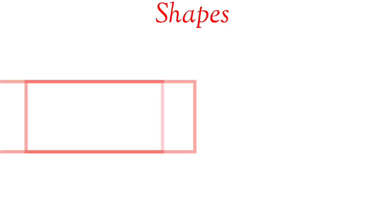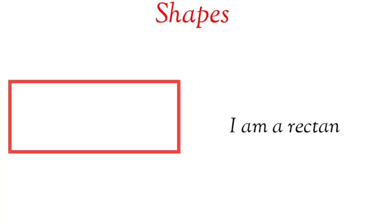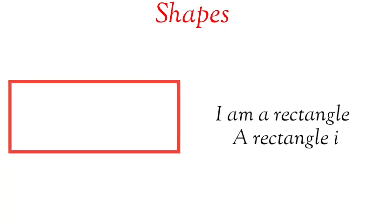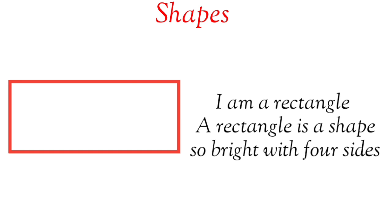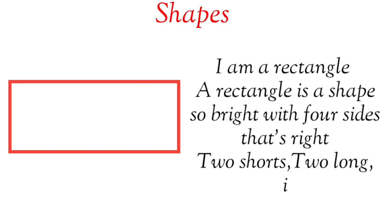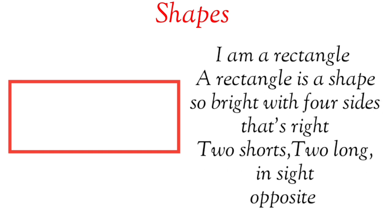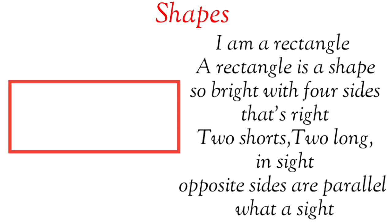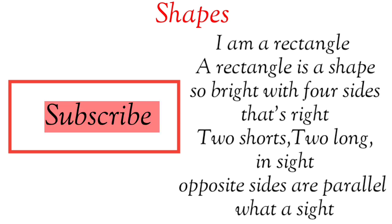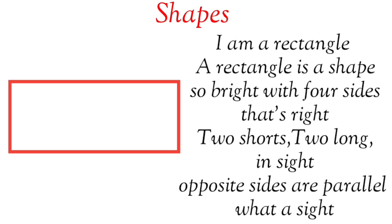Hello, I am a rectangle. A rectangle is a shape so bright with four sides that are right. Two short, two long inside. Opposite sides are parallel. What a sight.